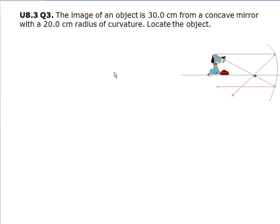So here we have a ray diagram. Then we will go ahead and list out what is given to us. So the radius is 20.0 centimeters, and the distance of the image is 30.0 centimeters.